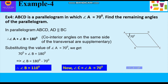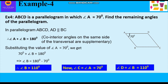Now since opposite angles of the parallelogram are equal, we can say that angle C is equal to angle A, which is 70 degrees, and angle D is equal to angle B, which is 110 degrees. So this is how we have found the remaining angles of the parallelogram.